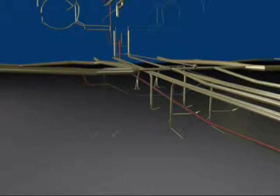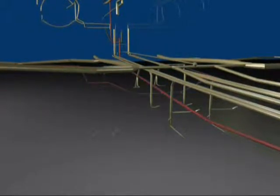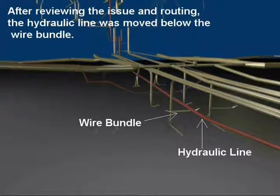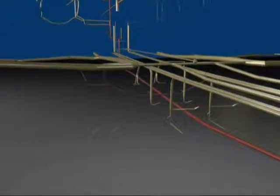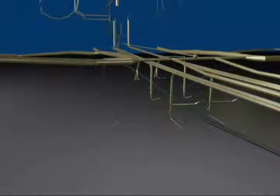In addition to design information, hydraulic routing can also be integrated into the eWistrat. Seen here, highlighted in red, is the hydraulic system for this model. Using the design principles provided by the OEM, the eWistrat located and reported this hydraulic line routed above this wire bundle. This issue would then be brought to the attention of system safety engineers, and a corrective action would be taken. In this example, the hydraulic line was moved below the wire bundle.